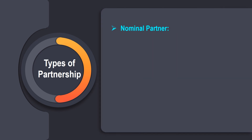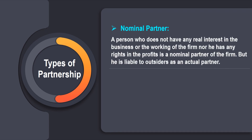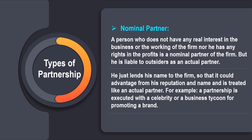The next is the nominal partner. A person who does not have any real interest in the business or working of the firm, nor any rights in the profits, is a nominal partner. However, he is liable to outsiders as an actual partner. He lends his name to the firm so that it can benefit from his reputation — for example, a partnership executed with a celebrity or business tycoon for promoting a brand.